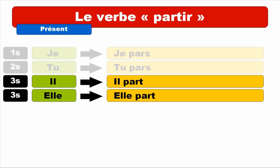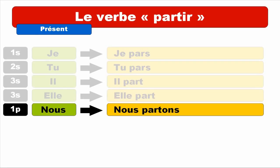Let's see NOUS now. First person of the plural — NOUS PARTONS. Repeat. NOUS PARTONS. Final S is not pronounced. You only need to pronounce the nasal O-N at the end. NOUS PARTONS. Repeat.